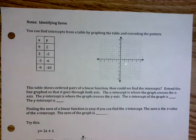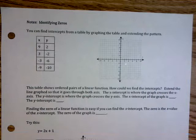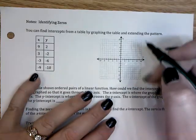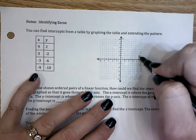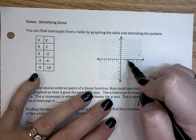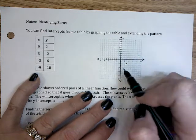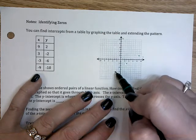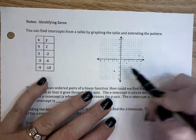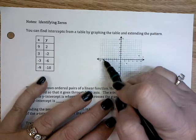Today we're going to talk about identifying zeros on a graph. The first thing I'm going to need to do is graph this table of values so I can see what is going on in my graph. I have 9, 2, I have 3, negative 2, I have negative 3, negative 6.